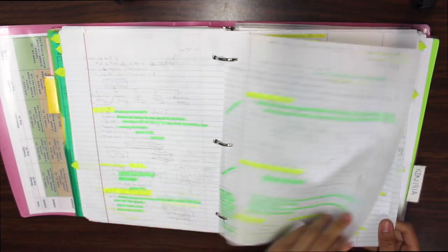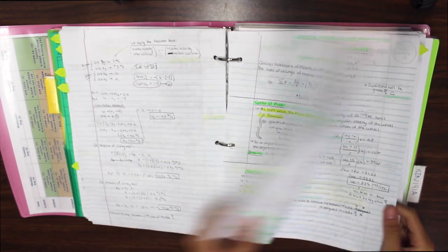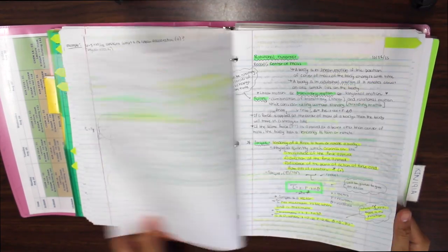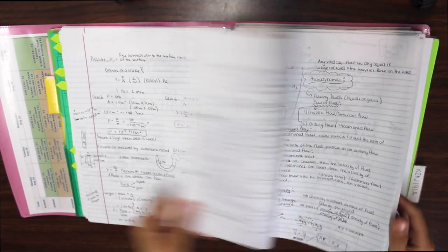So whenever the professor gave out handouts, I would three-hole punch them and put them in front of my notes. I color-coded my notes and also put my labs, homework, quizzes, and exams here.